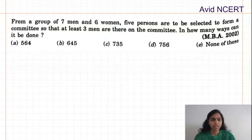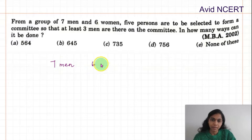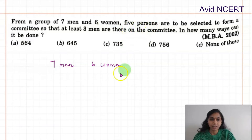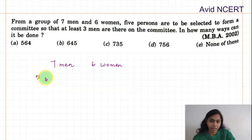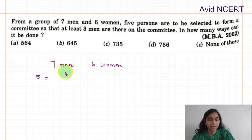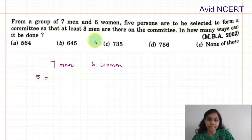From the problem, the data we have is seven men and six women. Five persons are to be selected in total, out of which at least three men should be taken. It can be taken in different combinations — out of seven men, at least three men are required.